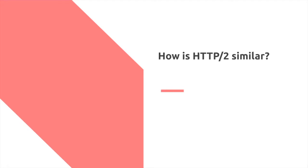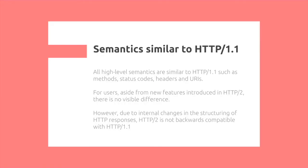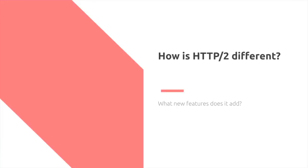So how is HTTP/2 similar to HTTP 1.1? All the high-level semantics are similar to HTTP 1.1, such as methods, status codes, headers, and URIs — everything covered previously is the same. For users, aside from new features introduced in HTTP/2, there is no visible difference. However, due to internal changes in the structuring of HTTP responses and requests, HTTP 2.0 is not backwards compatible with HTTP 1.1.